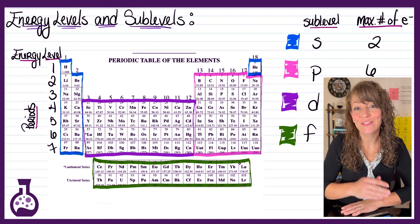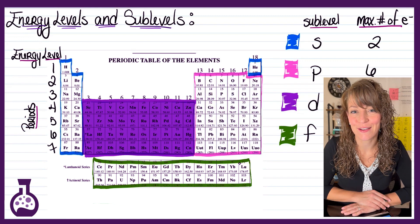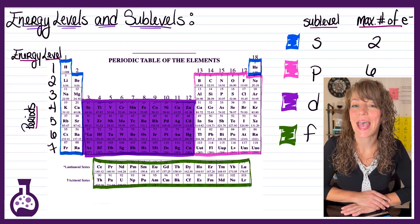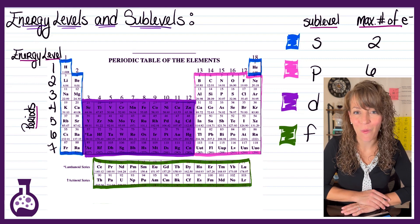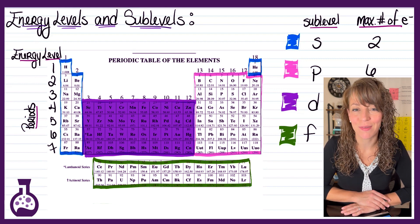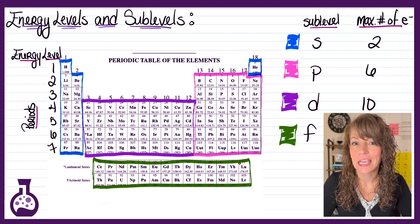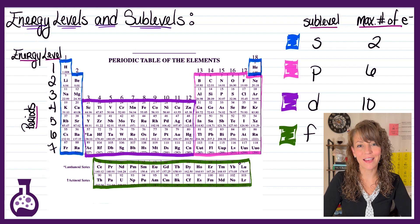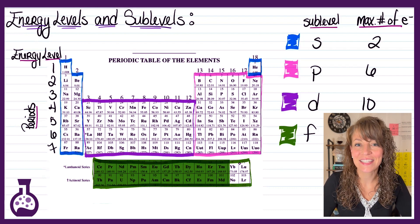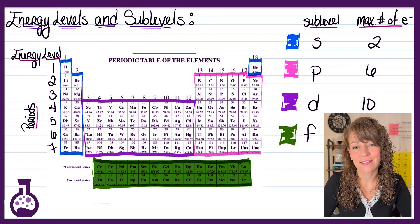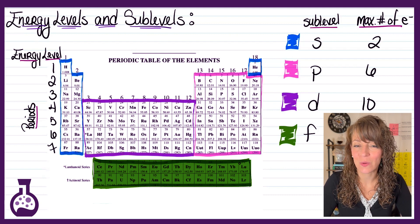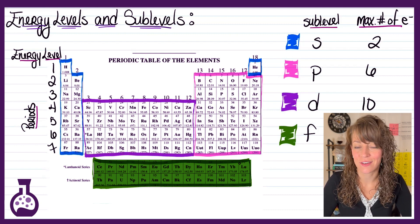In your d block, you've got 10 elements going across each one of those rows. And your d sublevel can only hold a maximum of 10 electrons. Finally, if you take a look at your f block, there's 14 boxes going across, and that corresponds to the fact that your f sublevel can hold a maximum of 14 electrons.